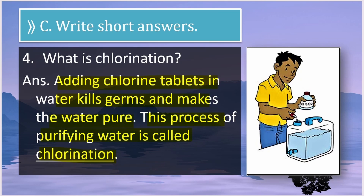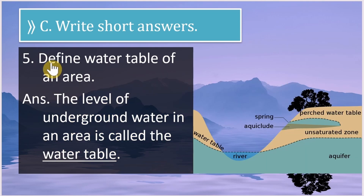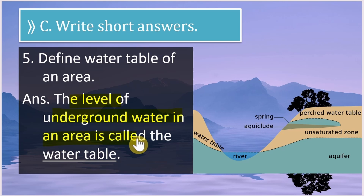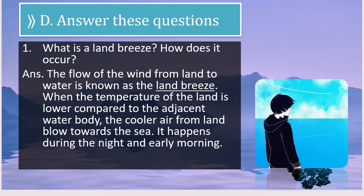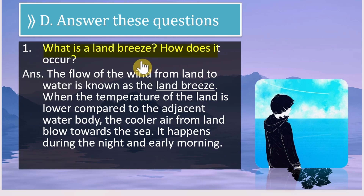Question 5: Define the water table of an area. The level of underground water in an area is called the water table. Now we will move on to the long answer questions. The first is: what is land breeze and how does it occur?